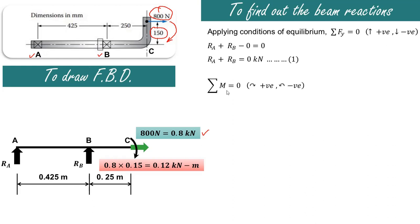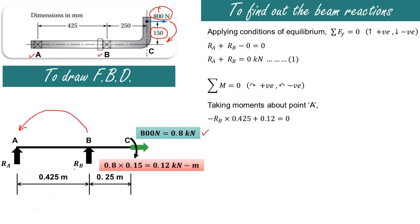Applying the second condition of equilibrium — summation of moments equals zero, clockwise positive and anticlockwise negative — and taking moments about point A: RB produces an anticlockwise moment, so it is minus RB into 0.425. There is also a clockwise end moment of 0.12 kN·m, which is positive. Solving gives RB equal to 0.12 divided by 0.425, which is 0.282 kilonewton.